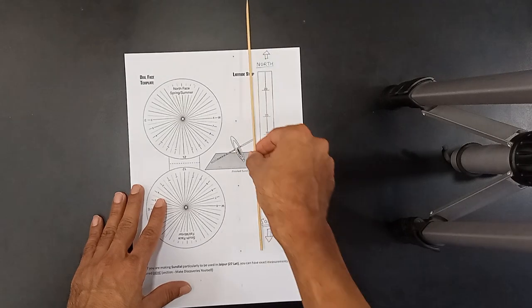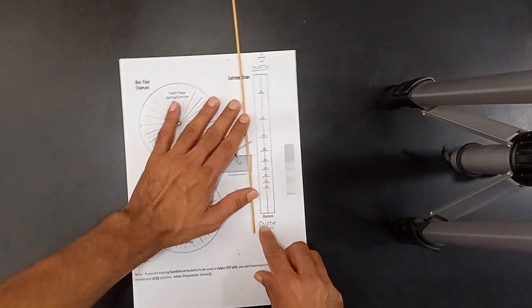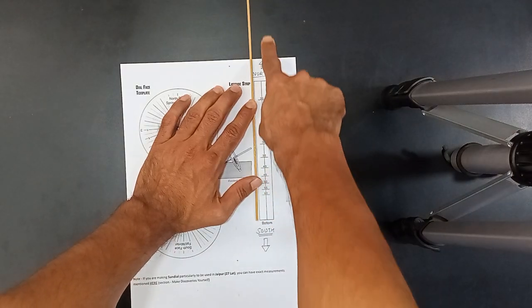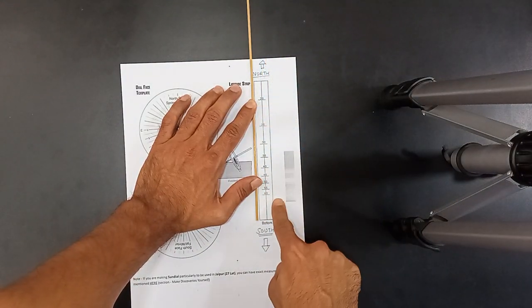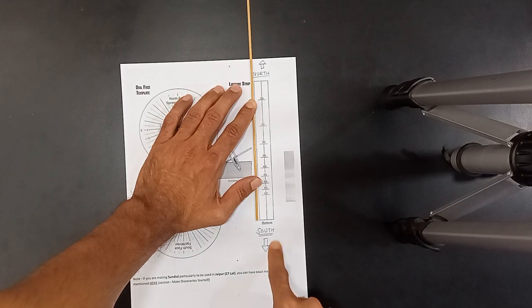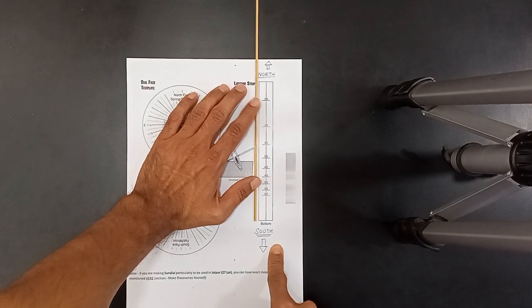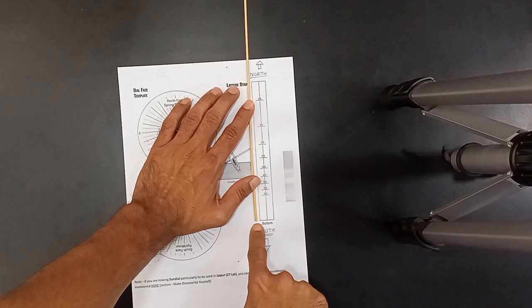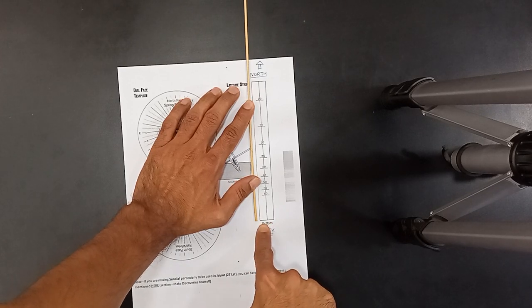What you have to do now is take a stick, align its bottom to the bottom part of the strip. Please also notice that this is north direction shown and this is the south direction. It's very important. Please look at it very carefully. You have to place this stick like this such that its bottom part is aligned with the bottom of the latitude strip.